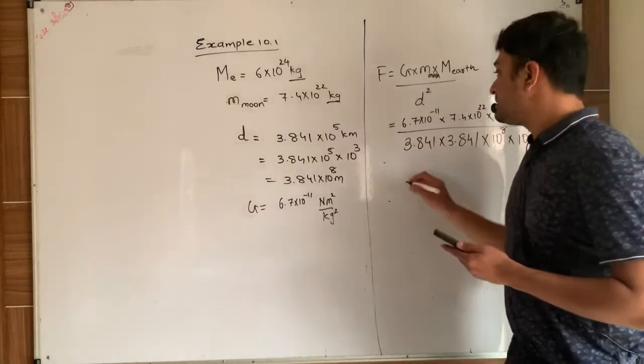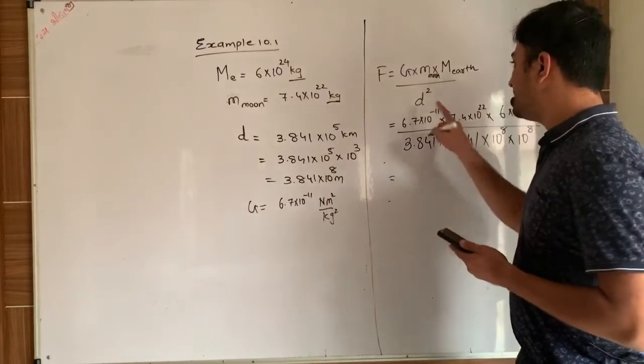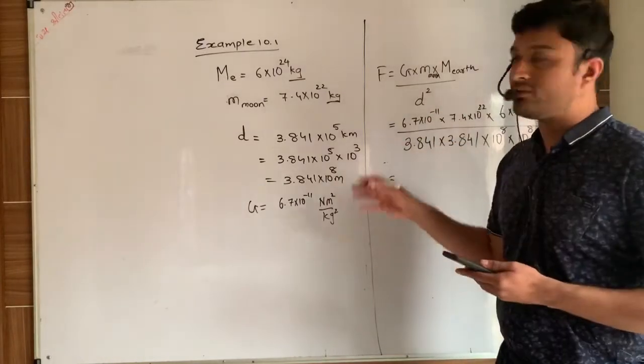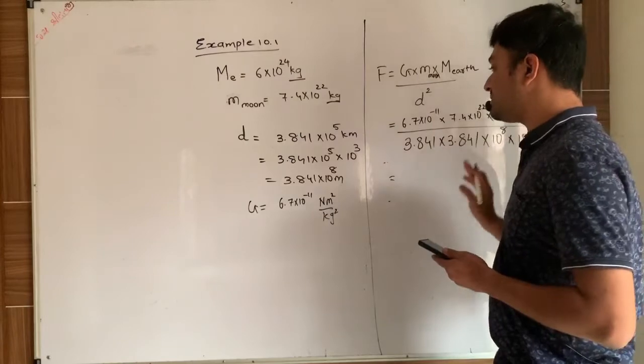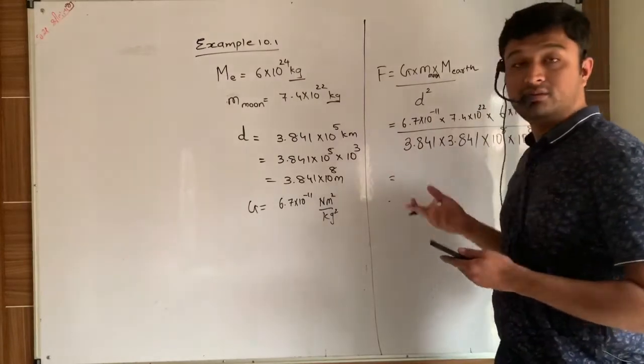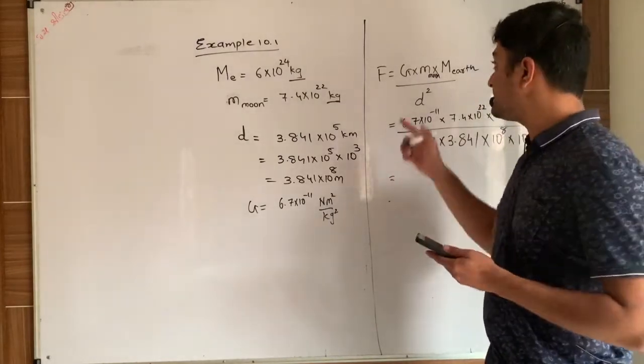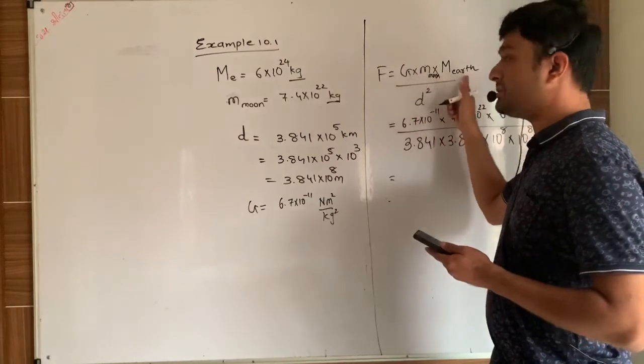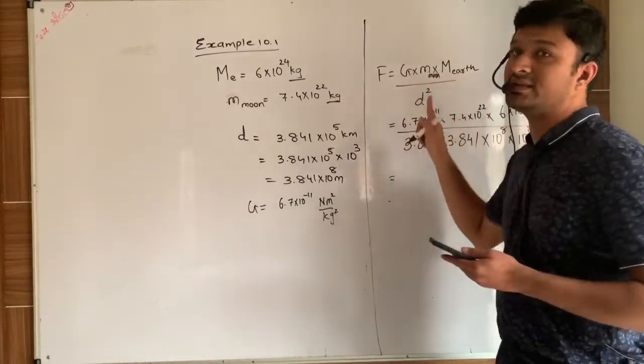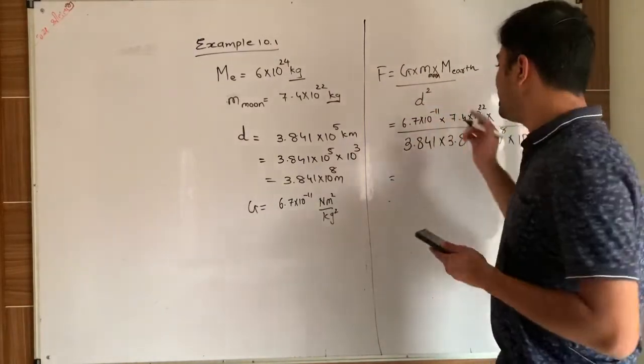So here I made D square because initially I have not written square over here. So I have written D square. That is what universal law of gravitation states that it is directly proportional to the product of their mass and inversely proportional to the square of distance between them.